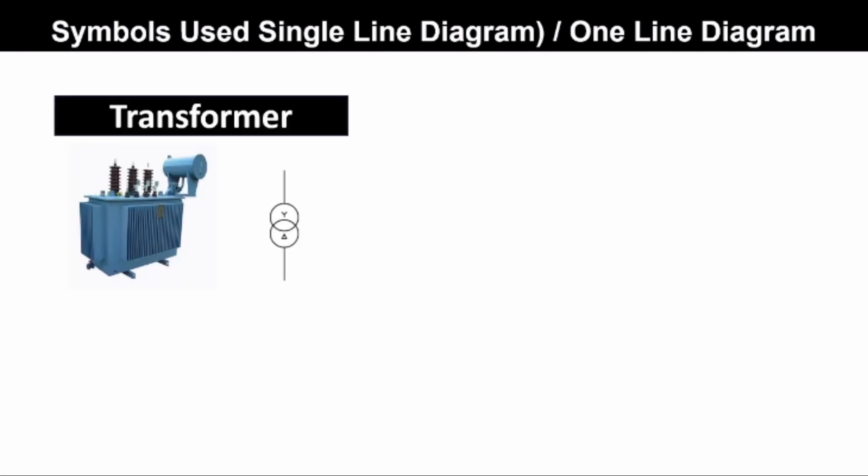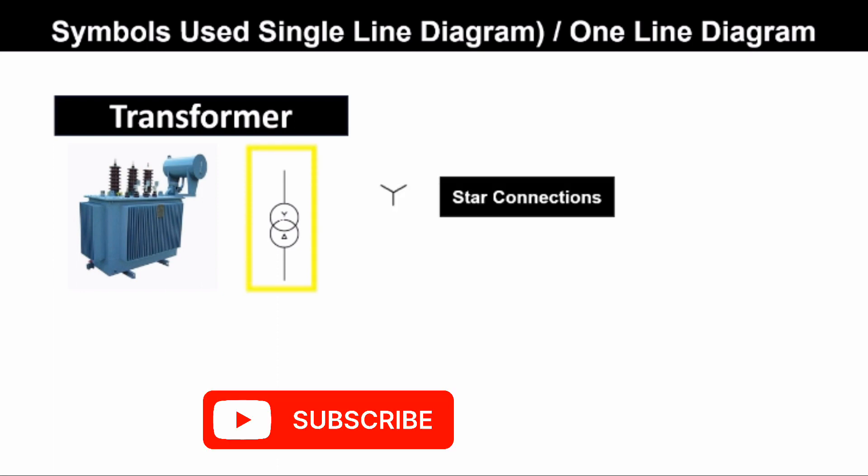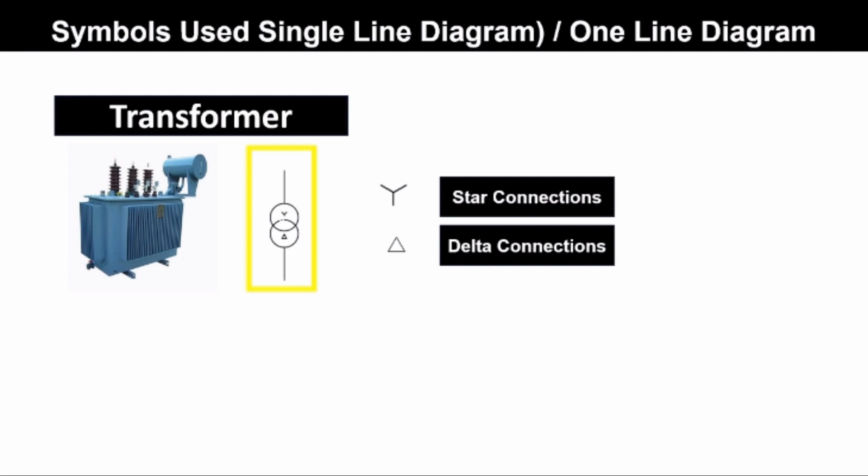This is the transformer and its symbol is this. The Y connection is used to represent the star connection and delta is used to represent the delta connection with the connection of the winding. If this symbol is used, that means the neutral of a transformer is solidly grounded.